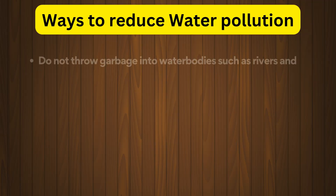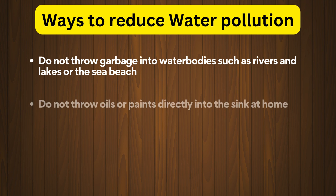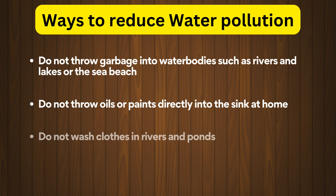What are the ways to reduce water pollution? Do not throw garbage into water bodies such as rivers, lakes, or the sea beach. Do not throw oils or paints directly into the sink at home. Do not wash clothes in rivers and ponds.